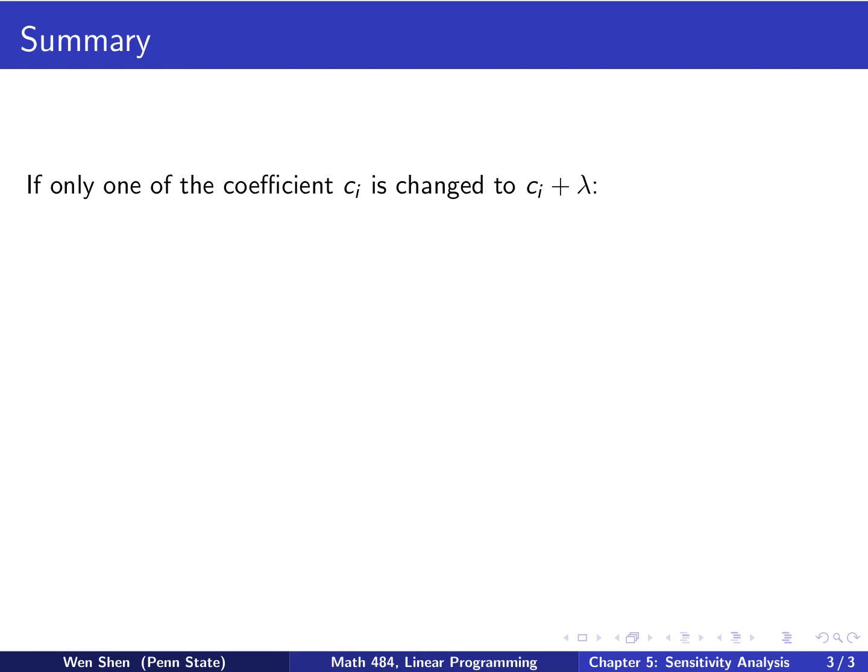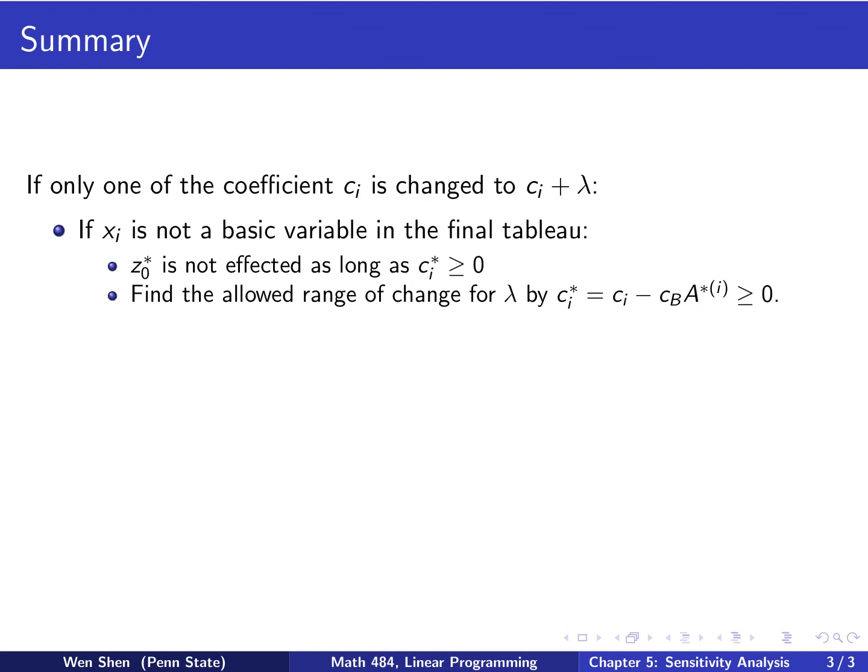If we are now changing one coefficient, Ci, and we change it into Ci plus lambda, what happens to the solution? Well, it depends. First case, if Xi is not a basic variable in the final tableau, then we know that the optimal value is not affected, as long as the change will not change the sign of C star. And once you have that, then you can find the allowed range of change for lambda by computing the C star in this expression and require it to be bigger than zero. That will give you the range.